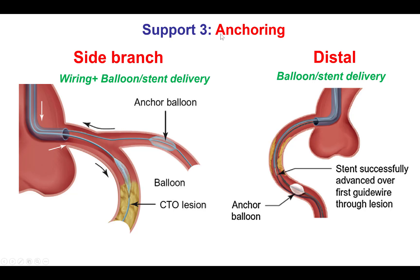The third technique is anchoring. The most commonly used is the side branch anchor: a wire is advanced to a side branch, a balloon is advanced over this anchoring wire and inflated at 6 to 8 atmospheres, and that provides support to the guide when attempting to deliver balloons and stents through the lesion. Another extremely useful technique for tortuous lesions is the distal anchoring technique, in which a guide wire is advanced through the lesion followed by a second guide wire, and a balloon is inflated over the first wire — essentially anchoring it — over which balloons and stents are then advanced.